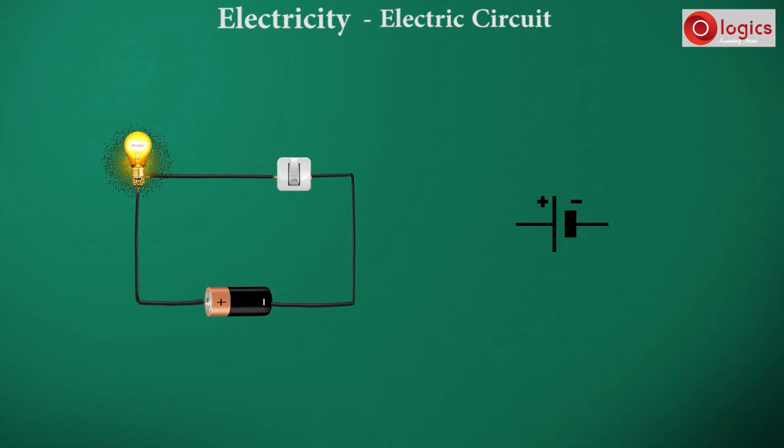This is the symbol for a cell. The cell supplies electrical current to the circuit, represented by a thin long line which is the positive terminal, and a thick short line which is the negative terminal.